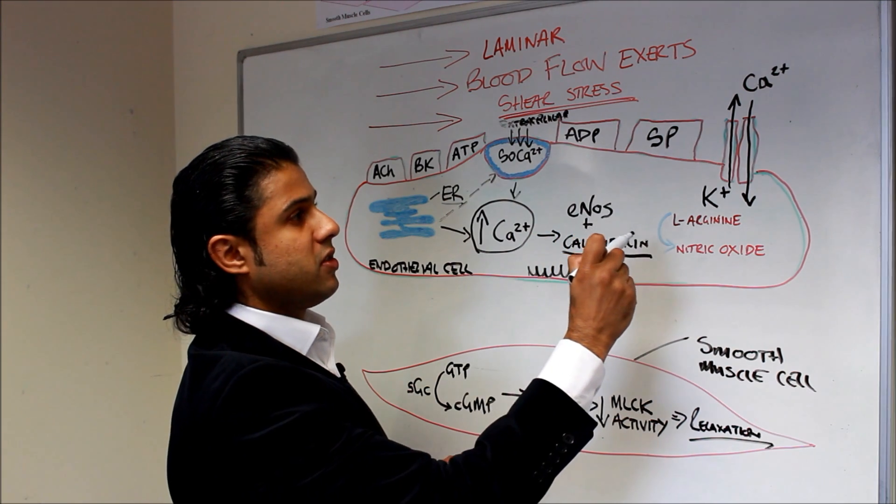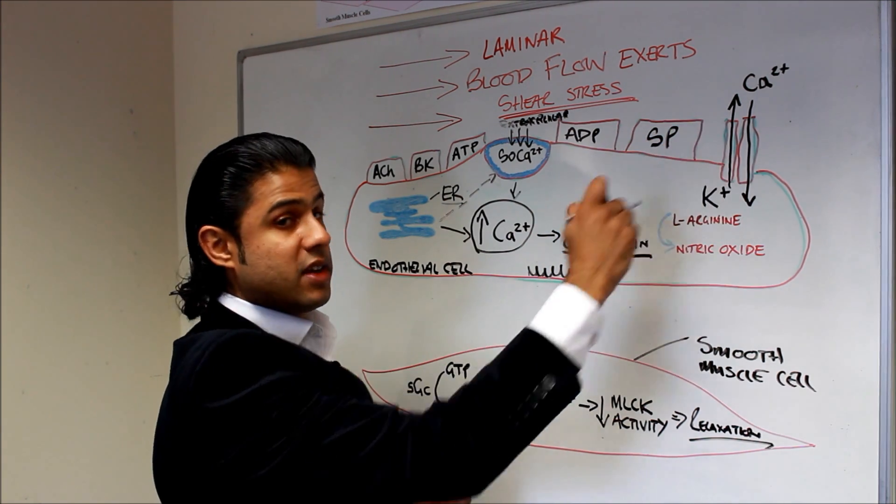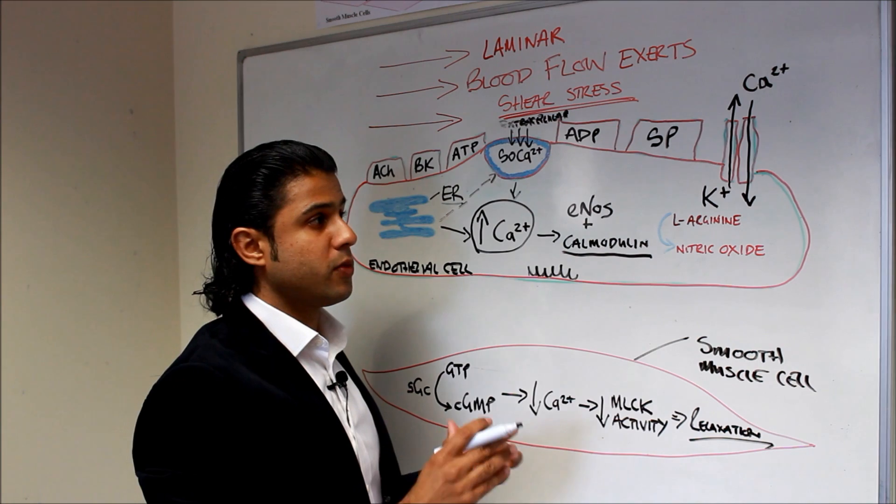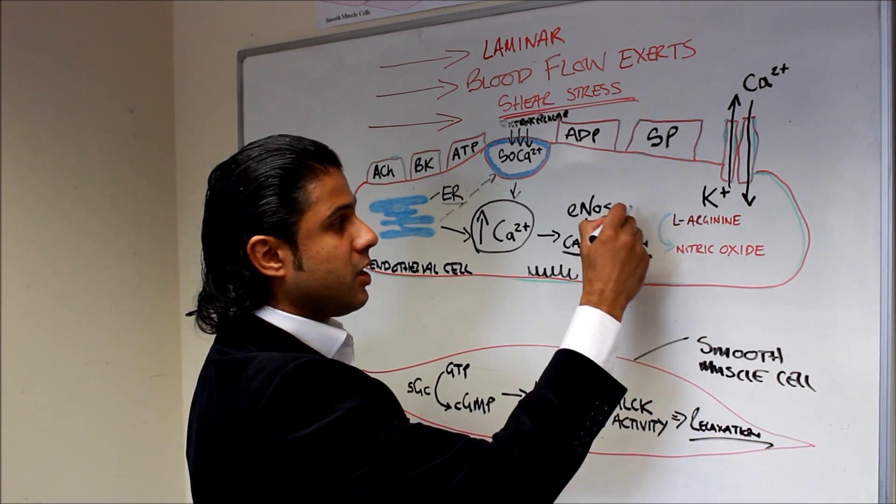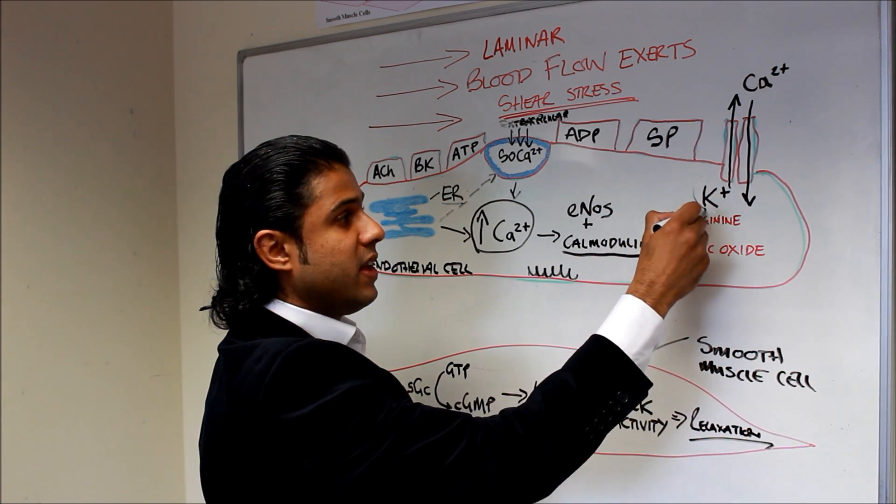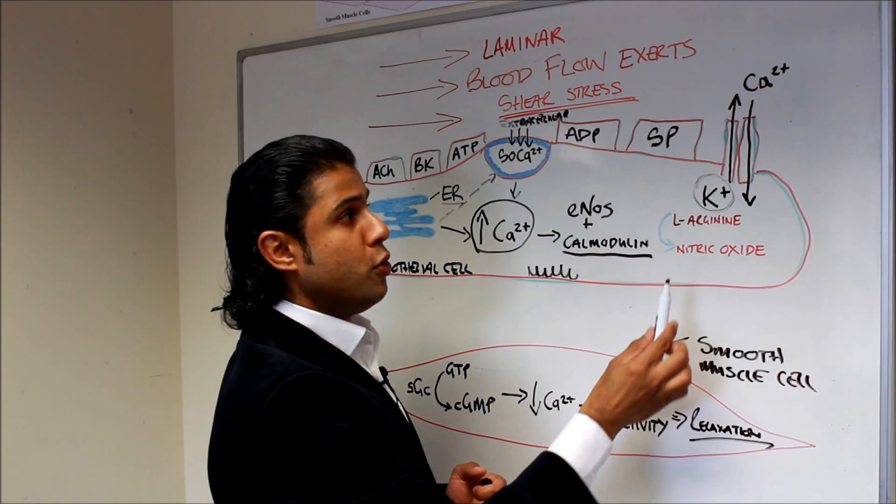Now what shear stress does is it activates calcium activated potassium channels. Now what this channel does is it allows the potassium which is contained within the endothelial cell to move outward.